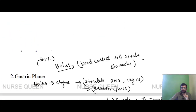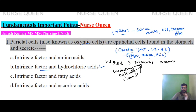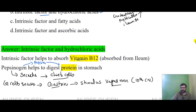Key summary points: gastric juice is 1.5 to 2 liters containing water, mucus, and HCl. Vitamin B12 absorption requires intrinsic factor. Pernicious anemia results from B12 deficiency. Parietal cells, also called Oxyntic cells, are epithelial cells in the stomach that secrete intrinsic factor and hydrochloric acid. Intrinsic factor helps absorb vitamin B12 from the ileum.